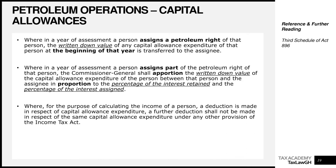Where a person assigns only part of a petroleum right, the Commissioner General shall apportion the written-down value of the capital allowance expenditure between the proportion of the interest retained and the percentage of the interest assigned. For example, if the written-down value at the start of the year is $100,000 and you assign 50% of your business, then $50,000 of the capital allowance expenditure is assigned to the assignee and you retain the remaining $50,000.